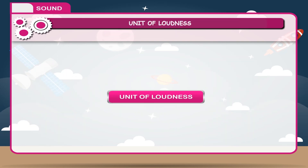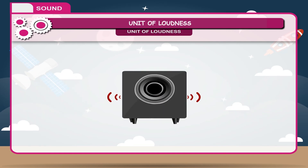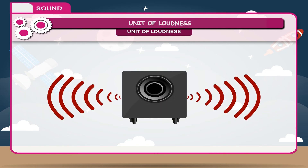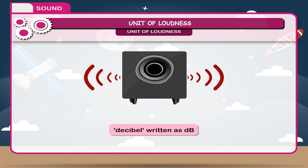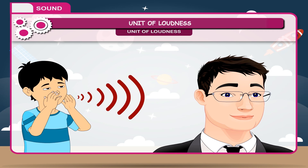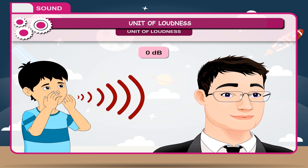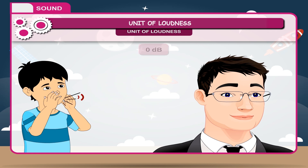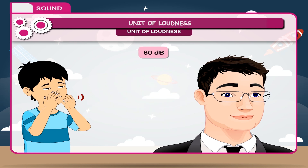Unit of loudness. A loud sound has larger energy and consequently can travel a greater distance. The loudness of sound is measured in decibels, written as dB. The softest sound which human ears can hear is 0 decibels. The loudness of sound of people talking normally is about 60 decibels.